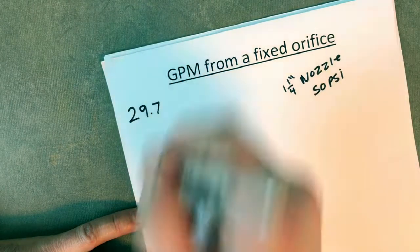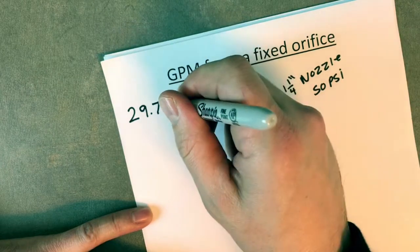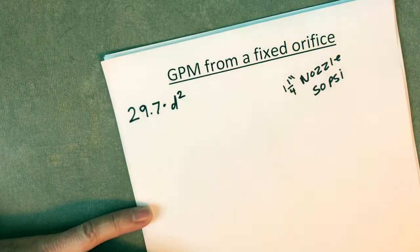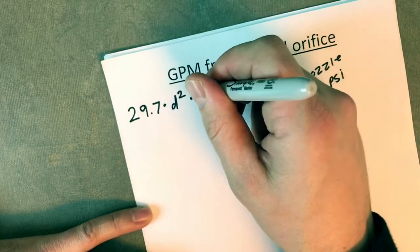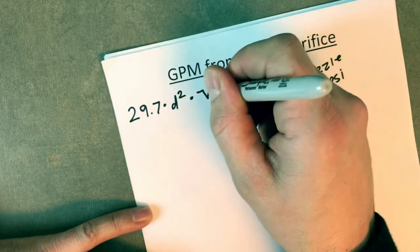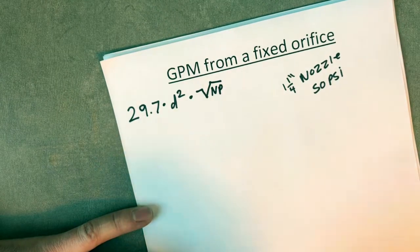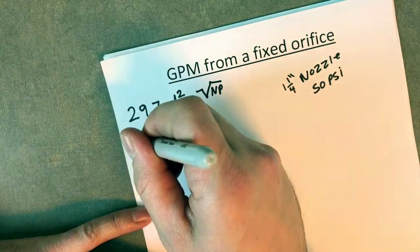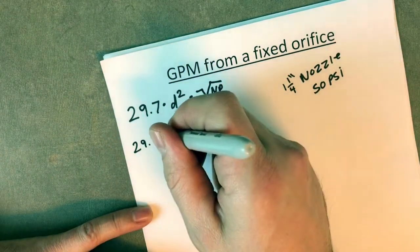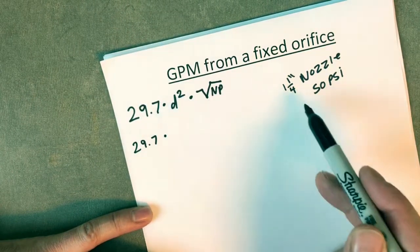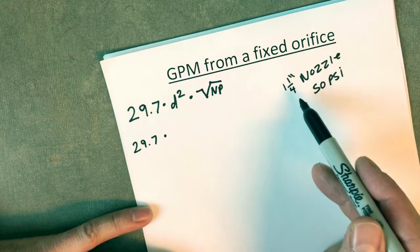29.7, which is a constant, times the tip diameter squared times square root of the nozzle pressure. So 29.7 will be our constant, times the tip diameter squared. In this case, we're using an inch and a quarter nozzle, smoothbore obviously.